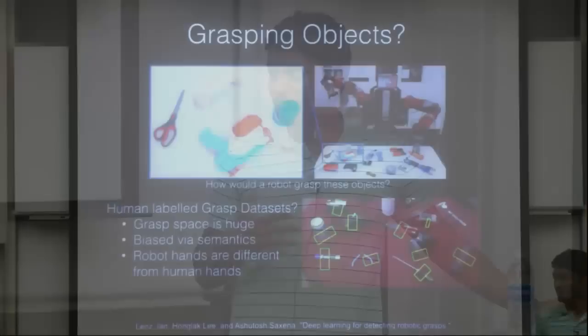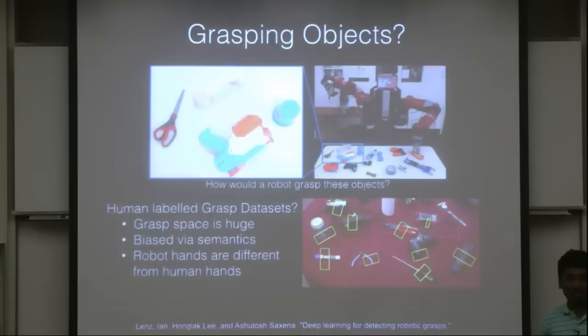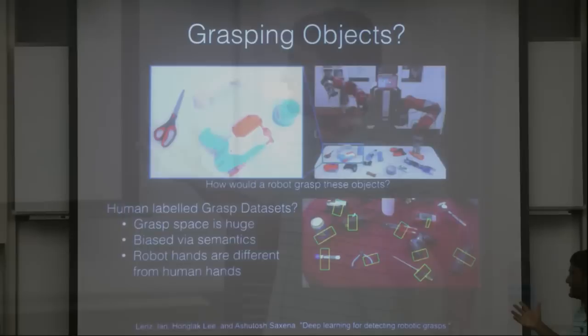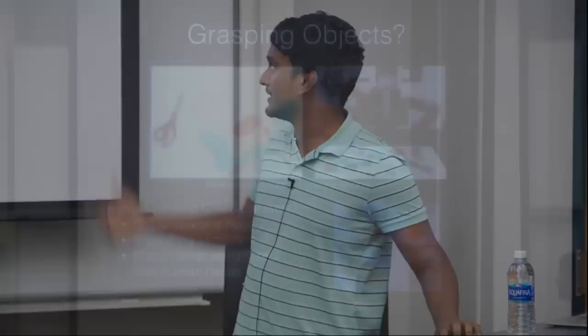Another possible approach, using learning, is to use human-labeled grasp datasets. Human annotators are given images of objects and asked to label how a human would grasp them. But the problem is that human semantics is very different from robot semantics. How a human grasps an object is very different from how a robot can actually grasp it. For example, if you have a given object, there are multiple different ways to grasp it, and humans would possibly not be able to annotate all of these.